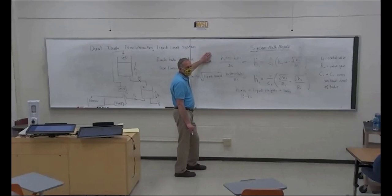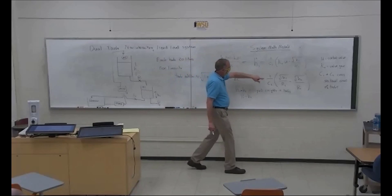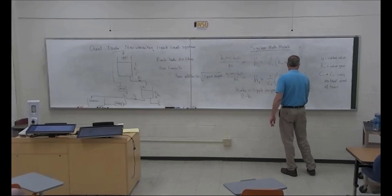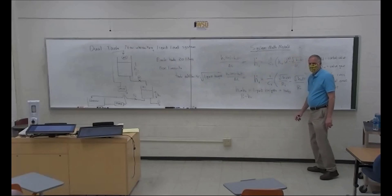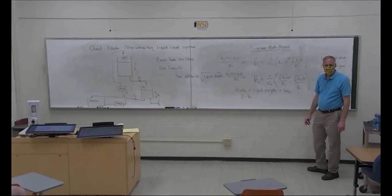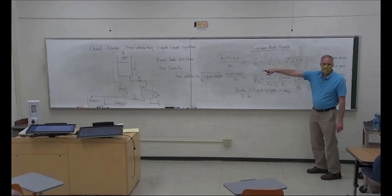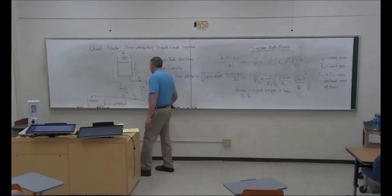H2(T+1) and H1(T+1) are the outputs of the system model, and they depend on H1(T), H2(T), and the valve setting U(T). I'm going to show you the system model they use — it's going to predict H2. They take H2 at T, H2 at T-1, U at T, and U at T-1 as inputs with a hidden layer.